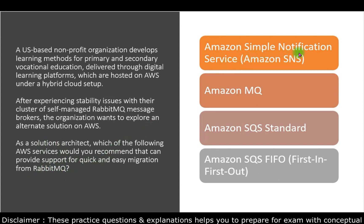The options are Amazon SNS, Amazon MQ, Amazon SQS Standard, and Amazon SQS FIFO. Amazon SNS — Simple Notification Service — is a highly available, fully managed pub/sub messaging service, but SNS does not provide support for migration from RabbitMQ. Amazon MQ is a managed message broker service for Apache ActiveMQ that makes it easy to set up and operate a message broker in the cloud. If an organization wants to move an existing messaging service to the cloud quickly and easily, AWS recommends Amazon MQ. So Amazon MQ is the correct choice here.